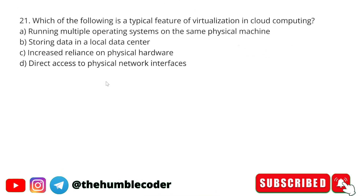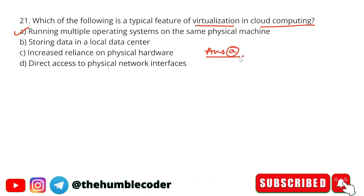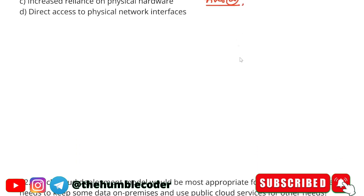Which of the following is a typical feature of virtualization in cloud computing? Options are: running multiple operating systems on the same physical machine, storing data in a local data center, increased reliance on physical hardware, or direct access to physical network interfaces. The correct answer is option A — running multiple operating systems on the same physical machine is the main typical feature of virtualization.